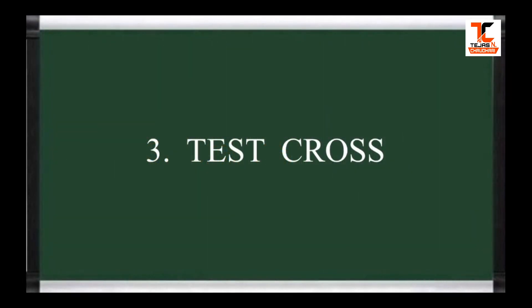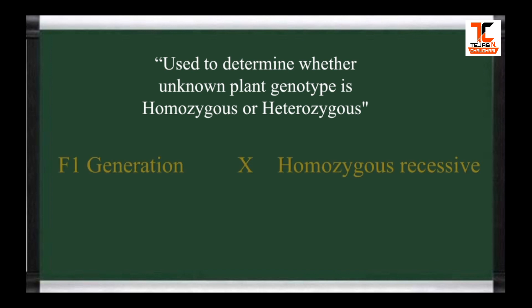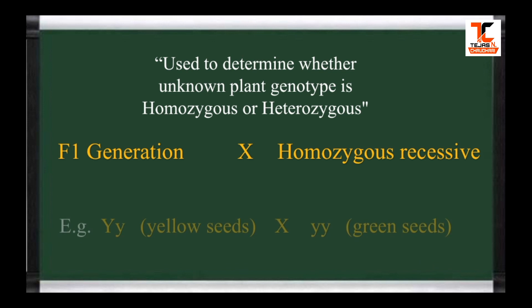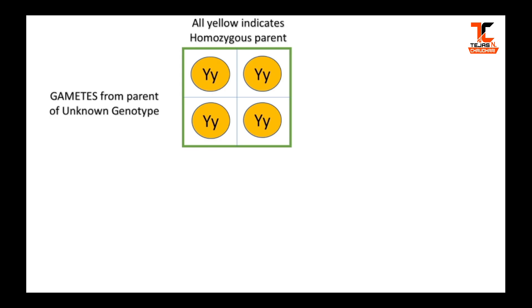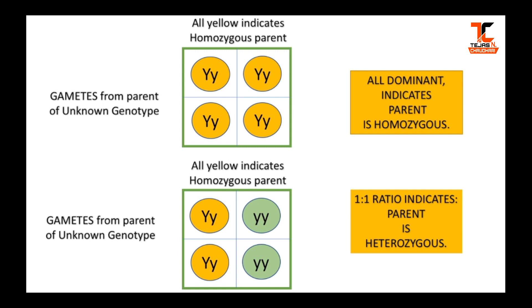Now we will study the third type, that is, test cross. A test cross can be used to determine whether an organism with a dominant phenotype is homozygous or heterozygous. For example, if we cross a yellow-seeded plant with a green-seeded plant and get all dominant yellow-seeded plants, this indicates the unknown parent was homozygous, because the same phenotype is observed. Whereas a 1:1 ratio in the second case indicates the parent was heterozygous, because both phenotypes were observed.